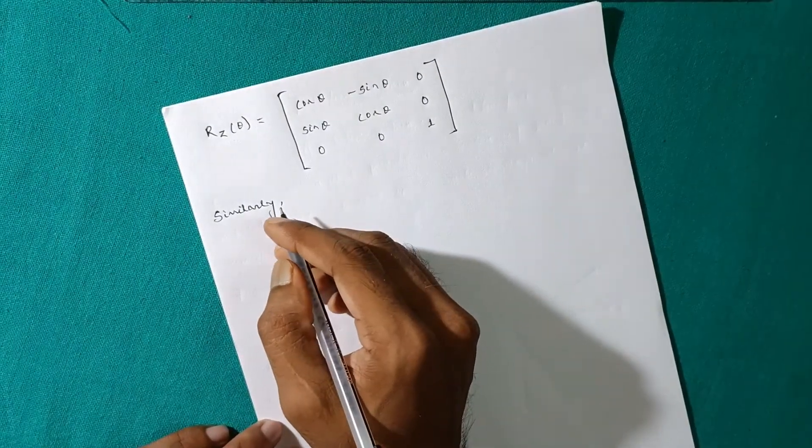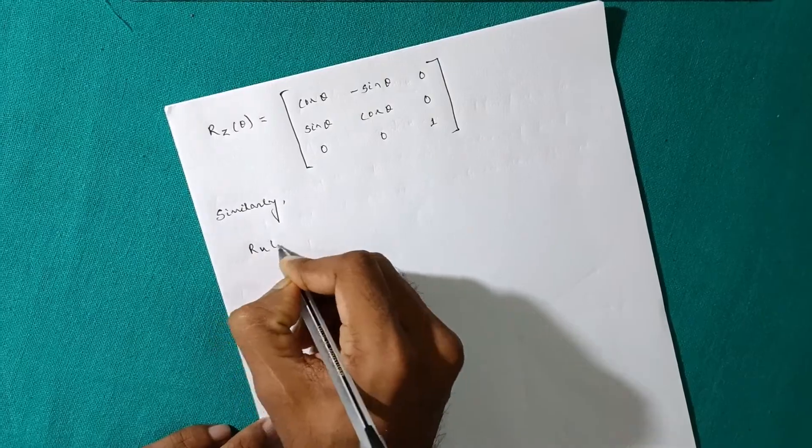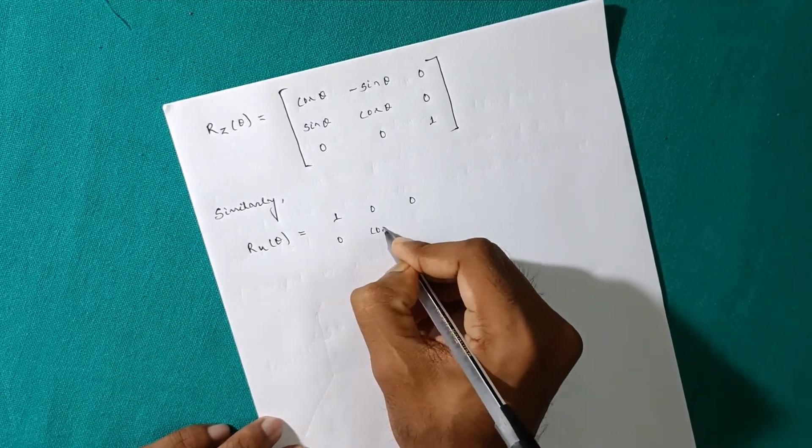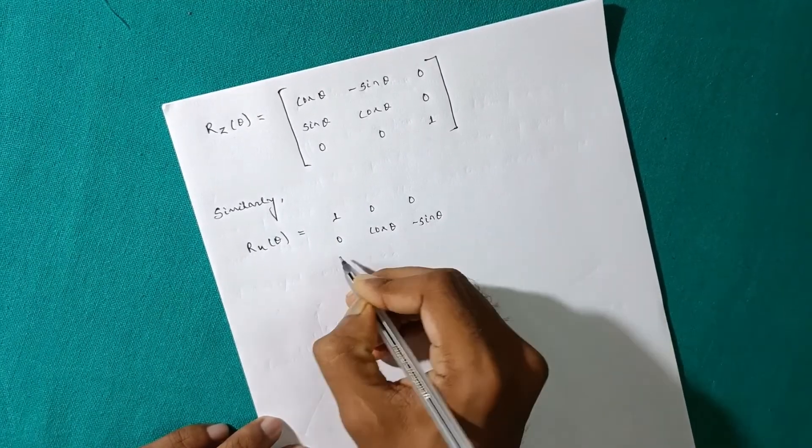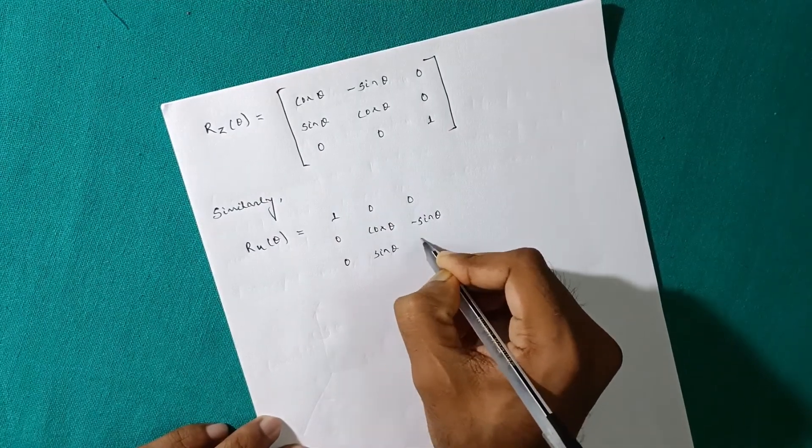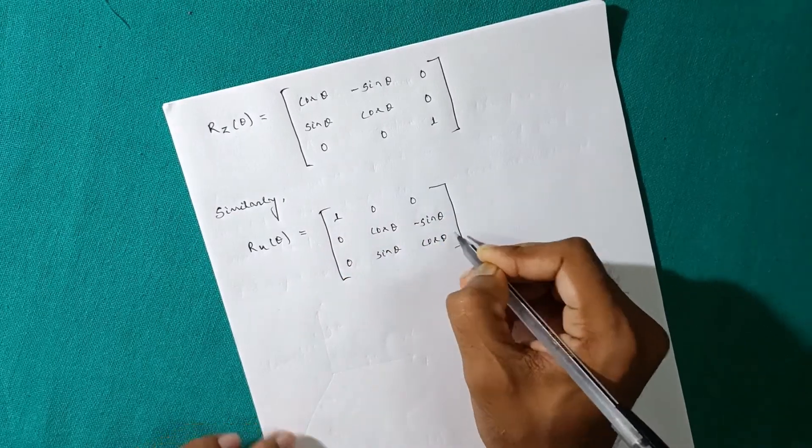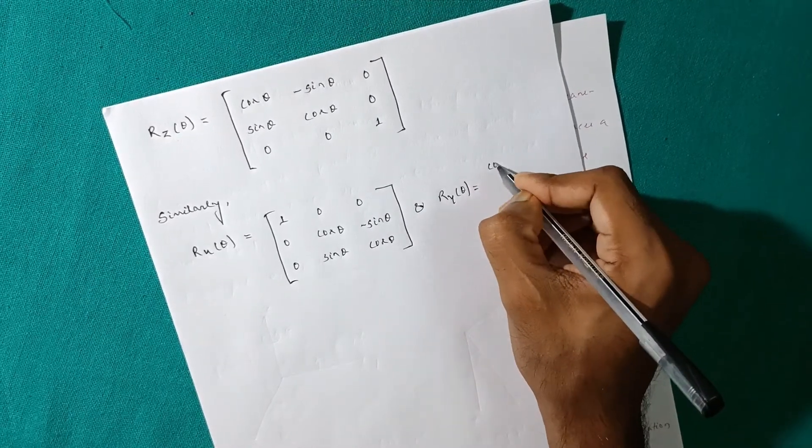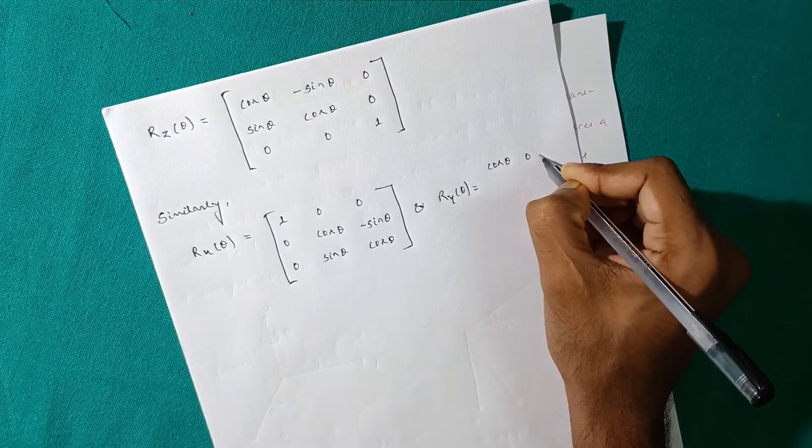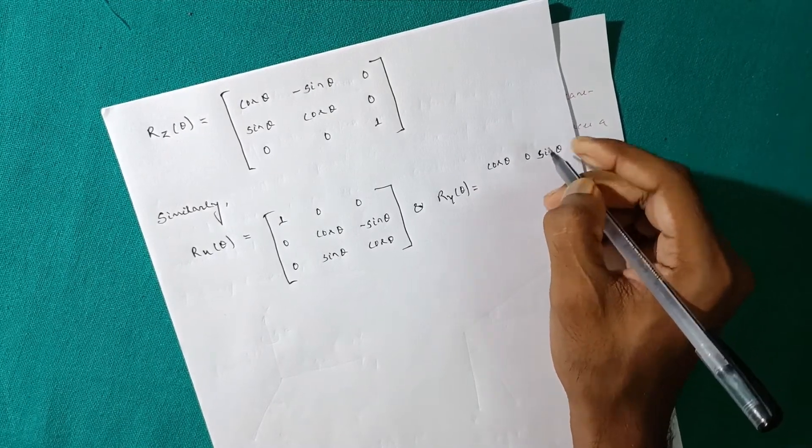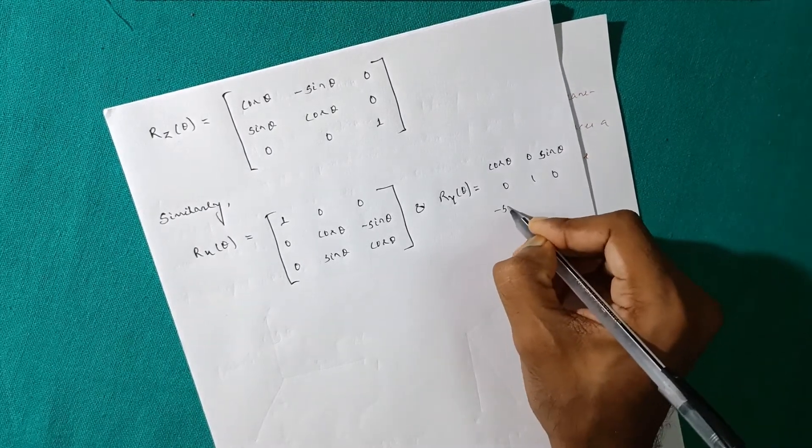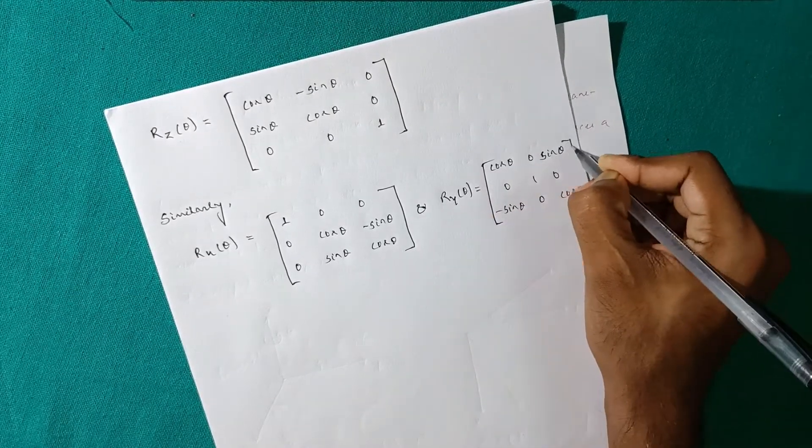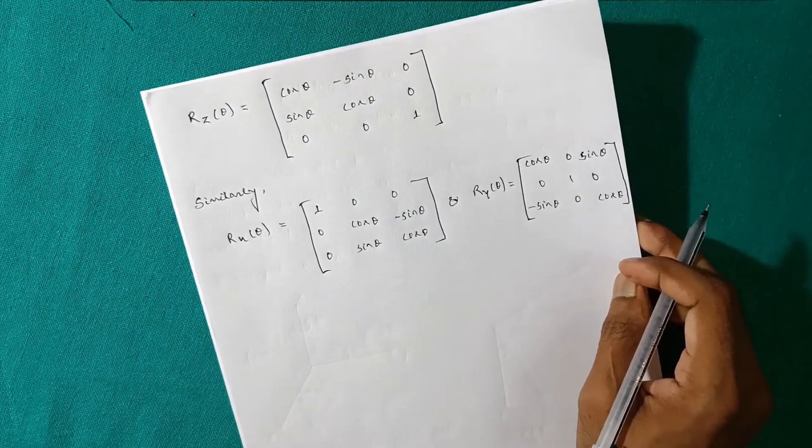Similarly you can find for X and Y axis. R_x(theta) equal to 1, 0, 0; 0, cos theta, minus sin theta; 0, sin theta, cos theta. And R_y(theta) equal to cos theta, 0, sin theta; 0, 1, 0; minus sin theta, 0, cos theta. So these are the three rotation matrices for Z, X and Y axis respectively.